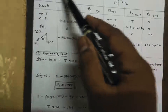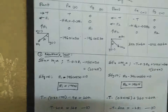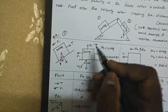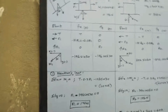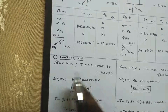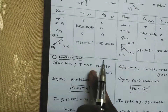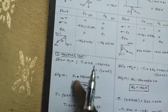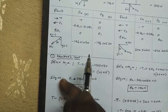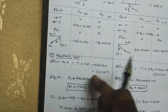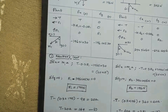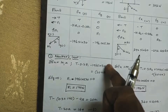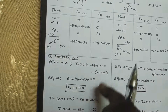Applying Newton's law for block 1 in the x-direction: T minus 0.3 R1 minus 196 sin theta equals m1 times a, where m1 equals 20 kg. In the y-direction: R1 minus 196 cos theta equals 0, giving R1 equals 170. Substituting back: T minus 0.3 times 170 minus 196 sin theta equals 20a, which simplifies to T minus 20a equals 149. This is equation one.